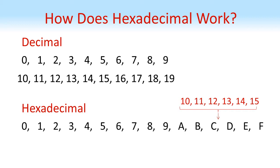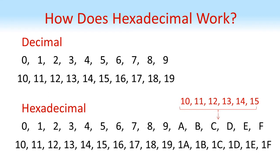Once we reach f we have run out of digits and so as with decimal we start a new column on the left and continue counting. Note how the number written 1 0 in hexadecimal is the sixteenth number, 1 1 is the seventeenth number and so on.